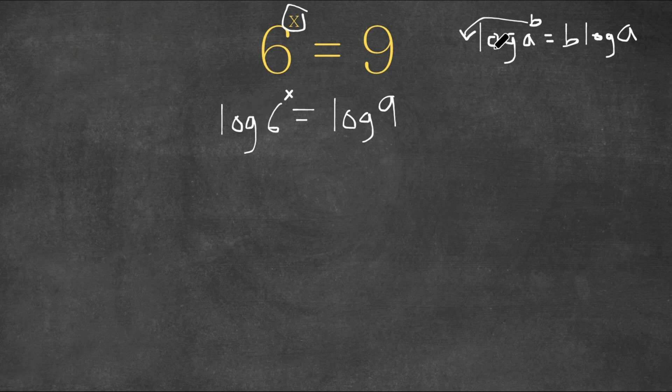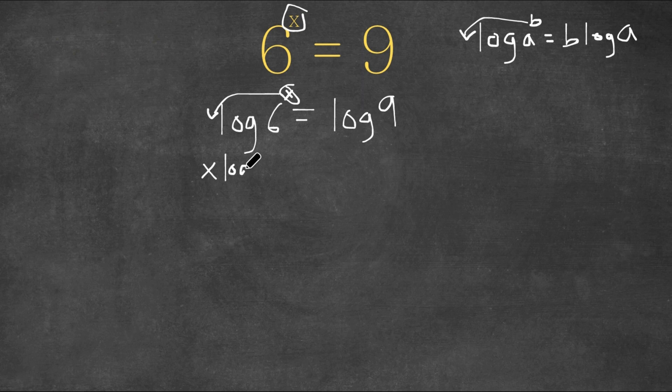this using our power property? We're going to take our exponent, which in this case is x, and move it in front of our log. So this changes into x times log 6 equals log 9.